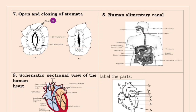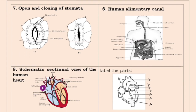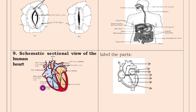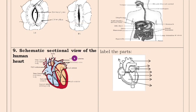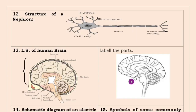Now let's see which diagrams come for the final exam. Seventh one is opening and closing of stomata. Next is the human alimentary canal. The next important one, because these questions will come for four marks, is the schematic sectional view of the human heart. It is very, very important — you have to draw it and mark the labels. And the next one is structure of a nephron. The nephron diagram they also regularly ask for two marks.